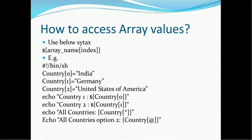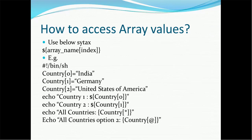Here is the script: it starts with #!/bin/sh, then we define the array 'country' — the 0th element is India, the 1st element is Germany, and the 2nd element is United States of America. We use echo to print values: echo 'country 1' then ${country[0]}, and on the same line print country 2 from element 1. To print all values, use ${country[*]} with an asterisk inside the square brackets.